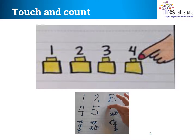So children, you all are very smart. You can count even without seeing the objects. Try this trick when you go home and before you go to bed. When there is no light in the room, try counting. Because you all are smart, you can count without even seeing.